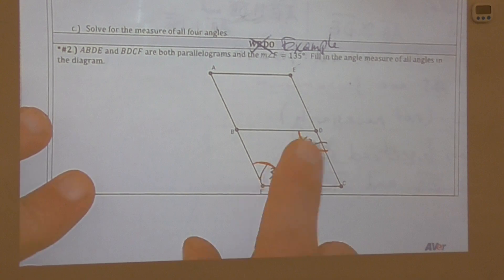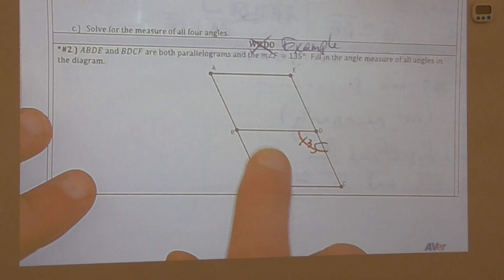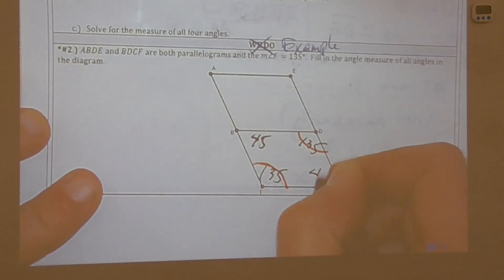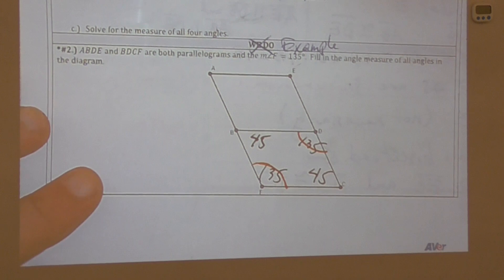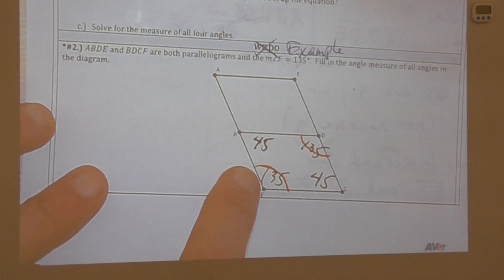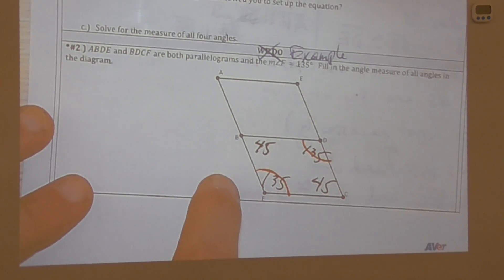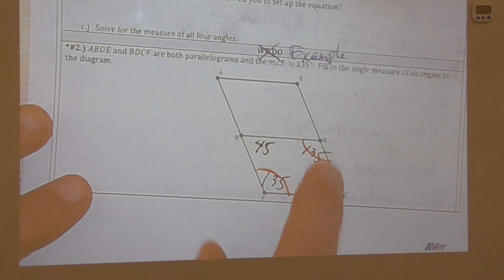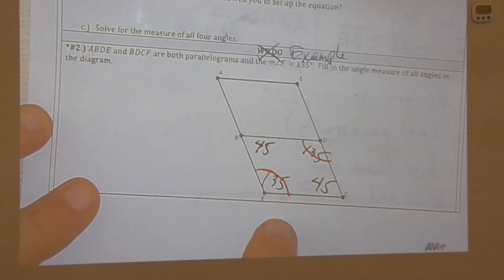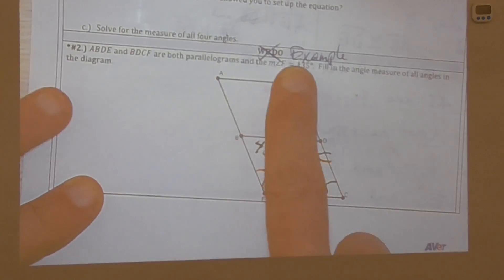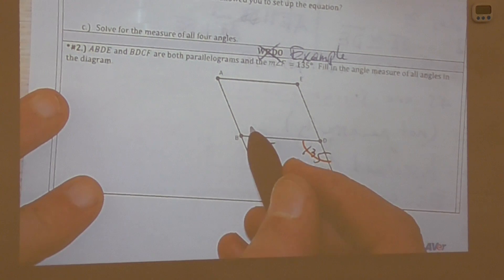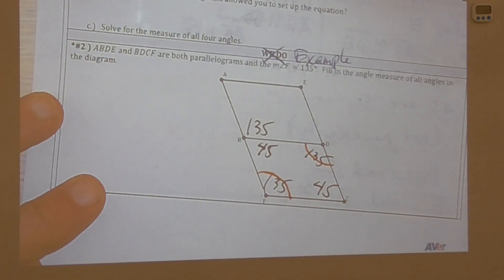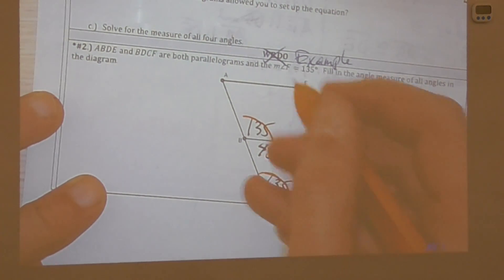The total in a parallelogram is 360 degrees. Adding the two 135-degree angles gives 270, leaving 90 degrees. That means 45 degrees at angle FBD and 45 degrees at angle FCD. This makes sense because adjacent angles are supplementary: 45 plus 135 equals 180. We also have parallel lines giving corresponding angles, so the 135 appears here and here, and the 45 appears here and here.